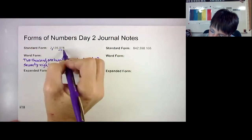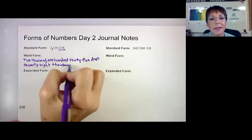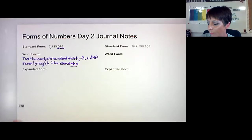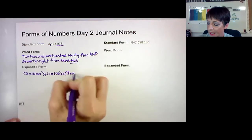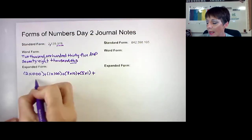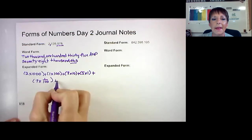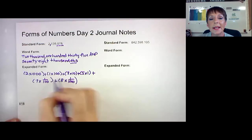And then we have to think about the place value that it's falling in. This is the tenths, the hundredths, the thousandths. So thousandths is my last word. And don't forget that THS because that tells me that it's a decimal number. The expanded form for this: we have 2 times 1,000 because that's in the thousands place, 1 times 100, 3 times 10, 5 times 1. And then let's work on the decimal place value. The 7 is in the hundredths place, and the 8 is in the thousandths place.